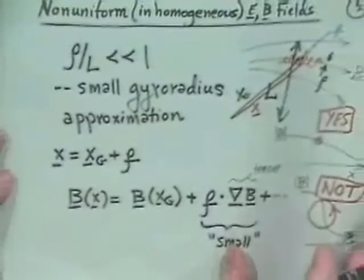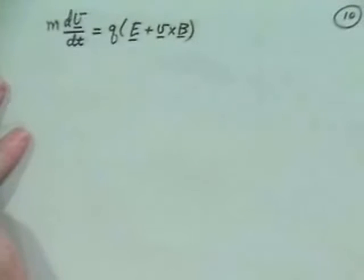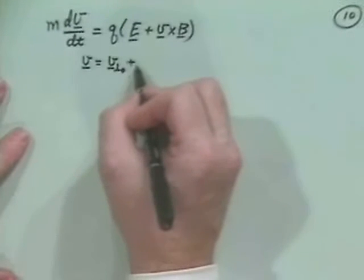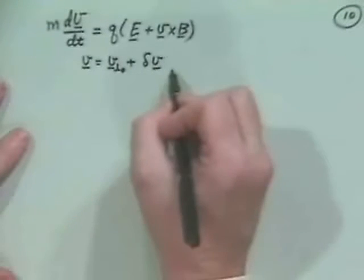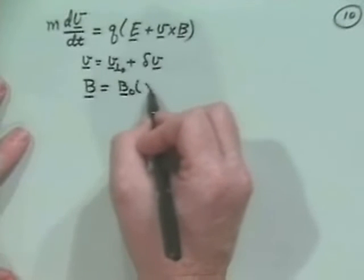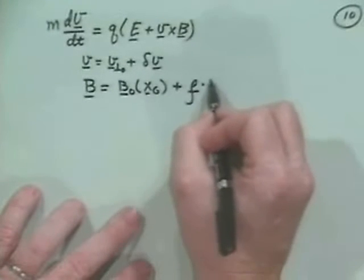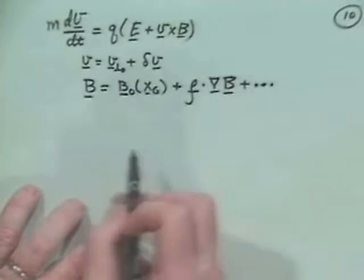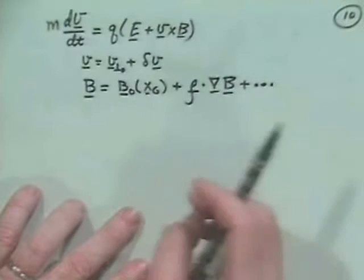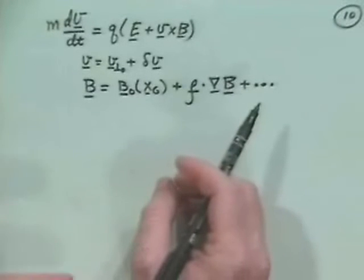So in fact, we're going to say that the particle position is its guiding center plus this small gyration around that. I won't go through all the formal details because it gets to be some pretty interesting mathematics. But the basic procedure is we want to take our equation, m dv/dt, good old F equals ma, as q times e plus v cross b. And we also want to say that the magnetic field is equal to some lowest order magnetic field measured at the guiding center, then plus rho dot gradient b and so forth.